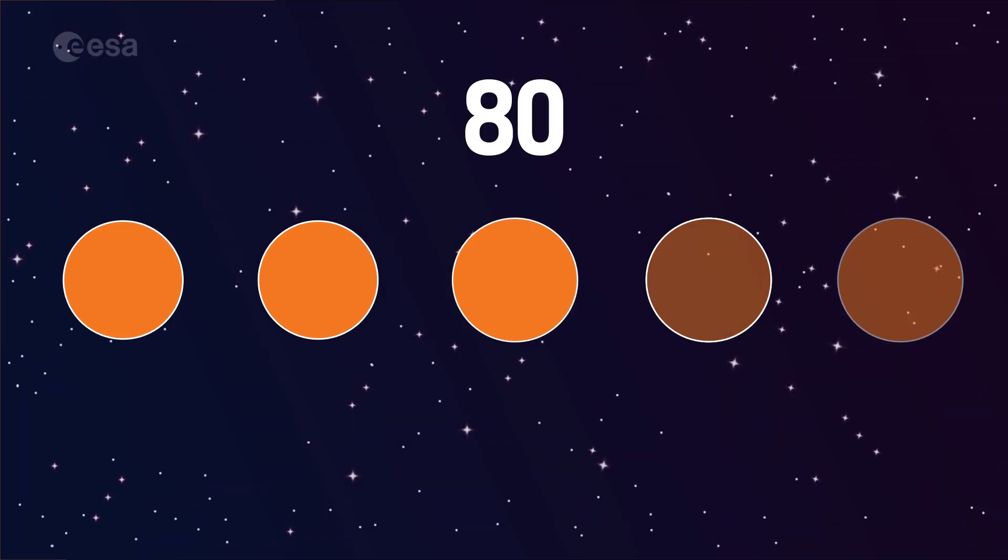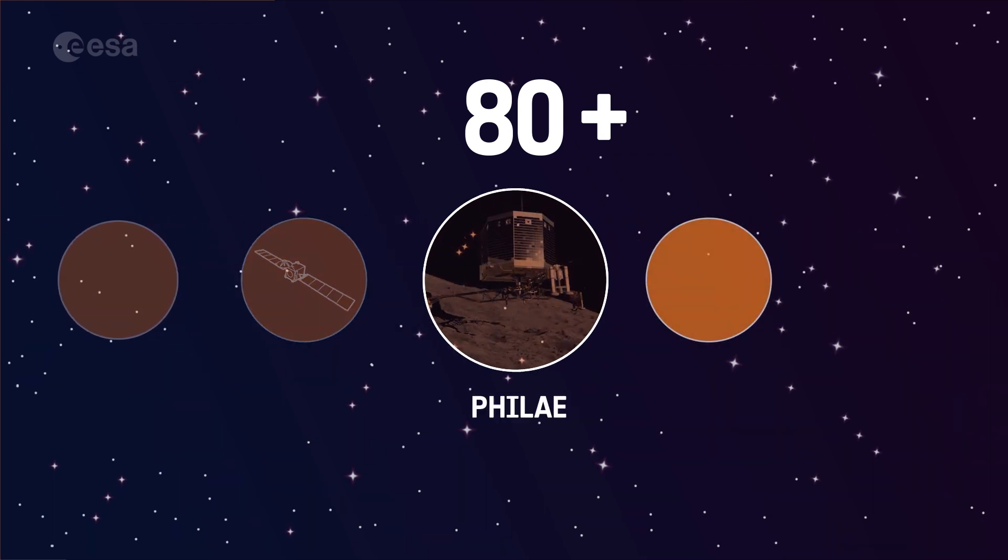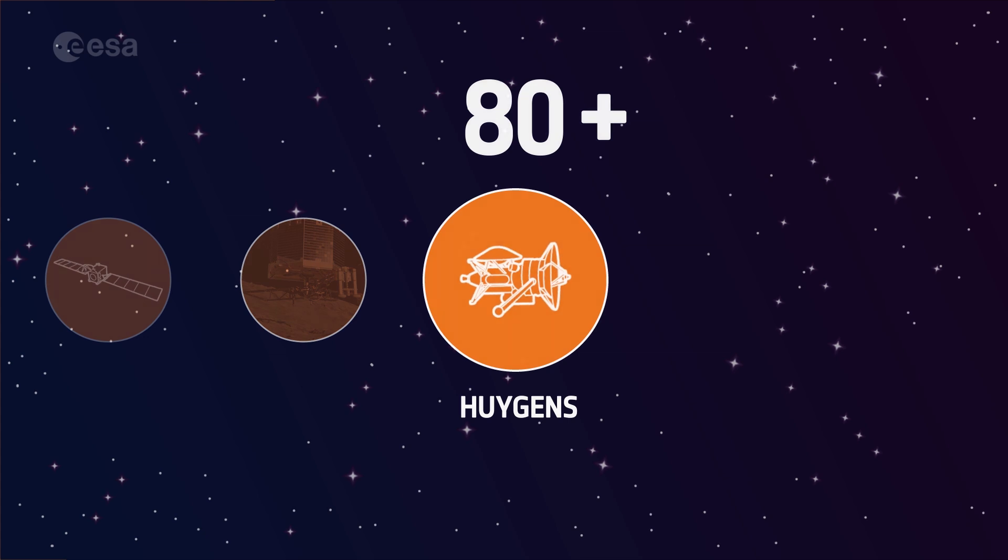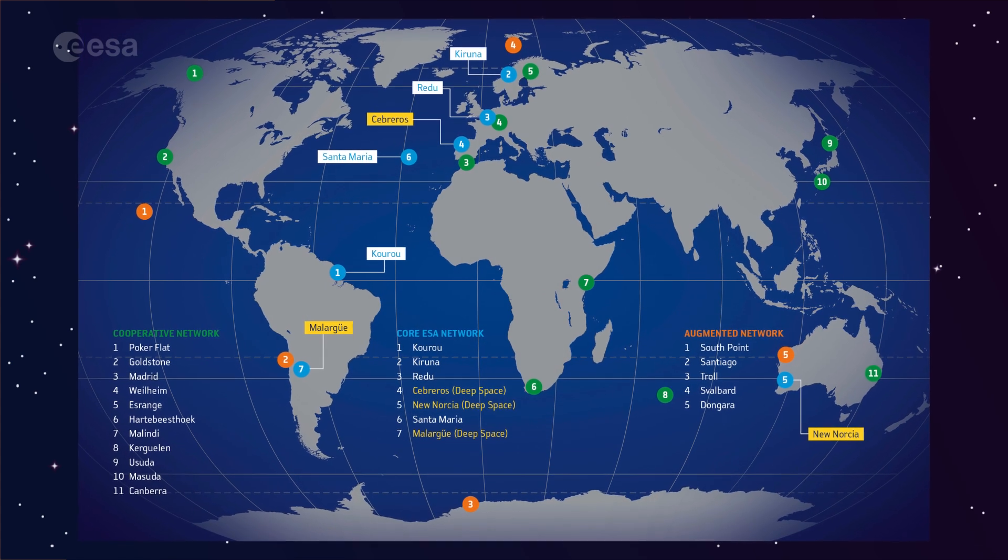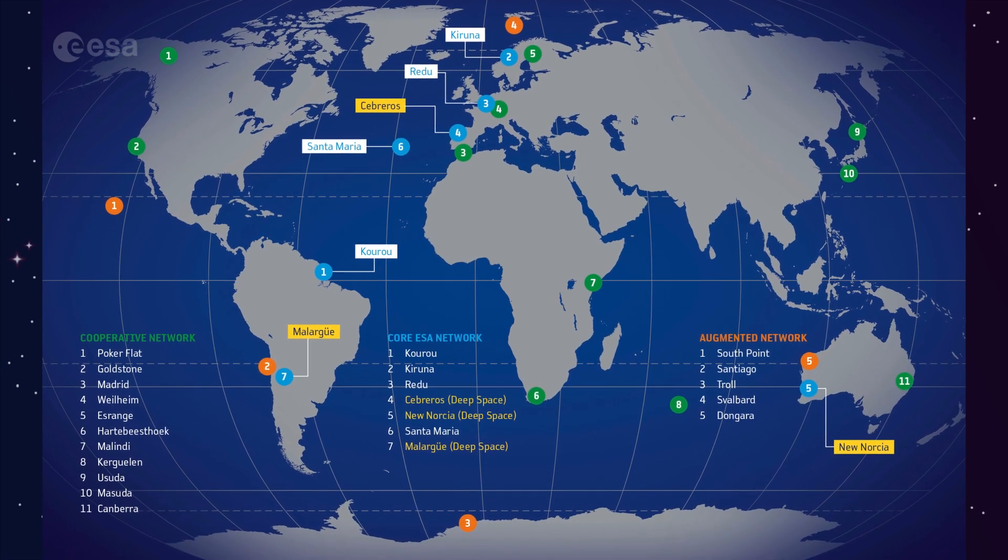We've flown more than 80 missions, including Rosetta, which landed Philae on comet 67P, and Huygens, which touched down on Saturn's moon. We operate a worldwide network of ground stations to keep in contact with missions anywhere.